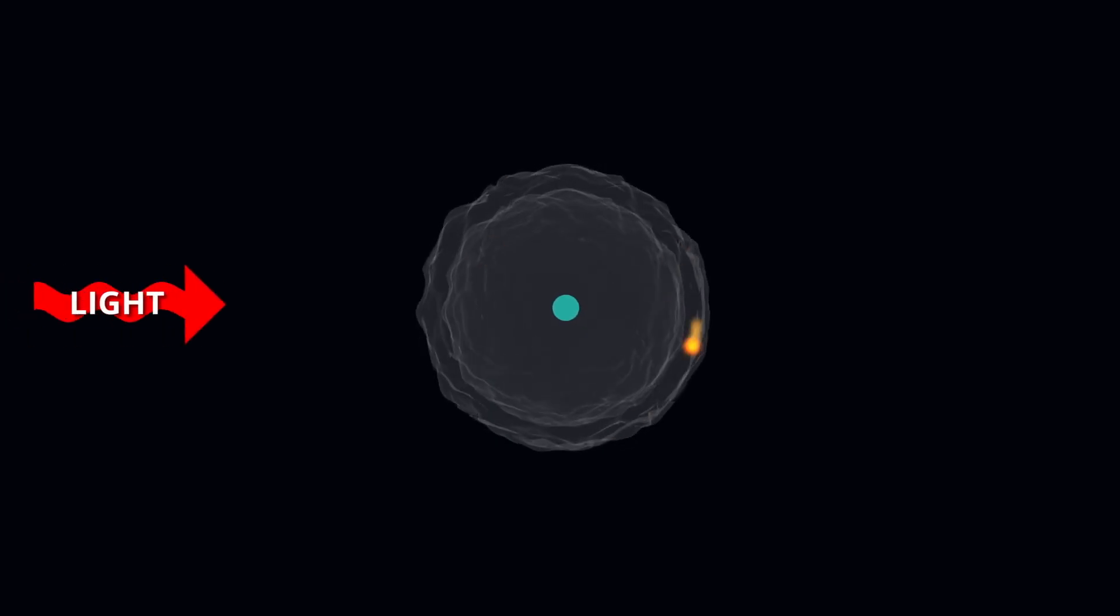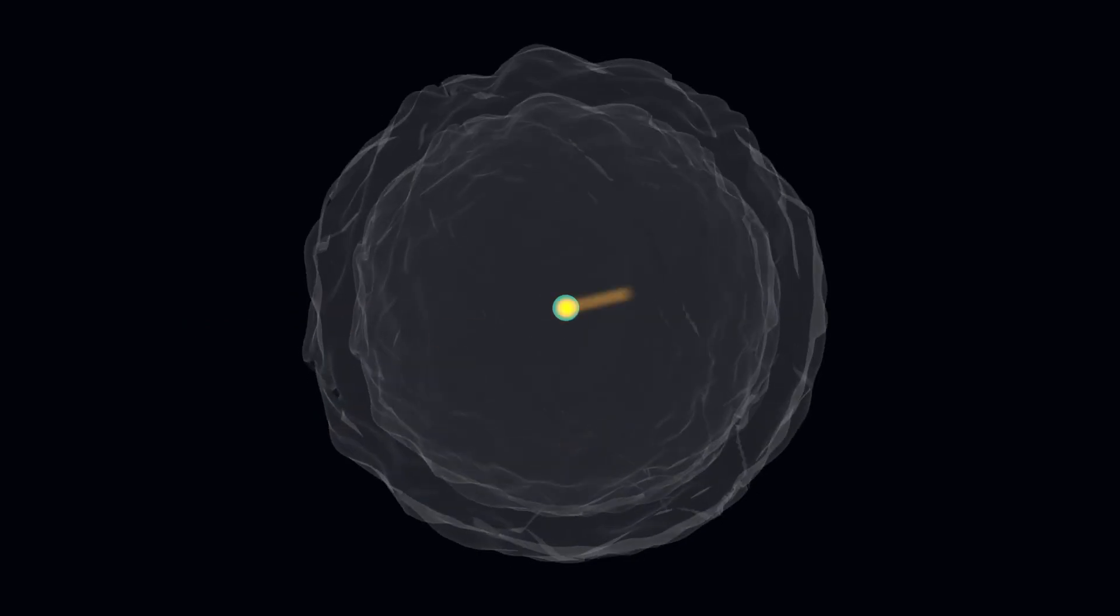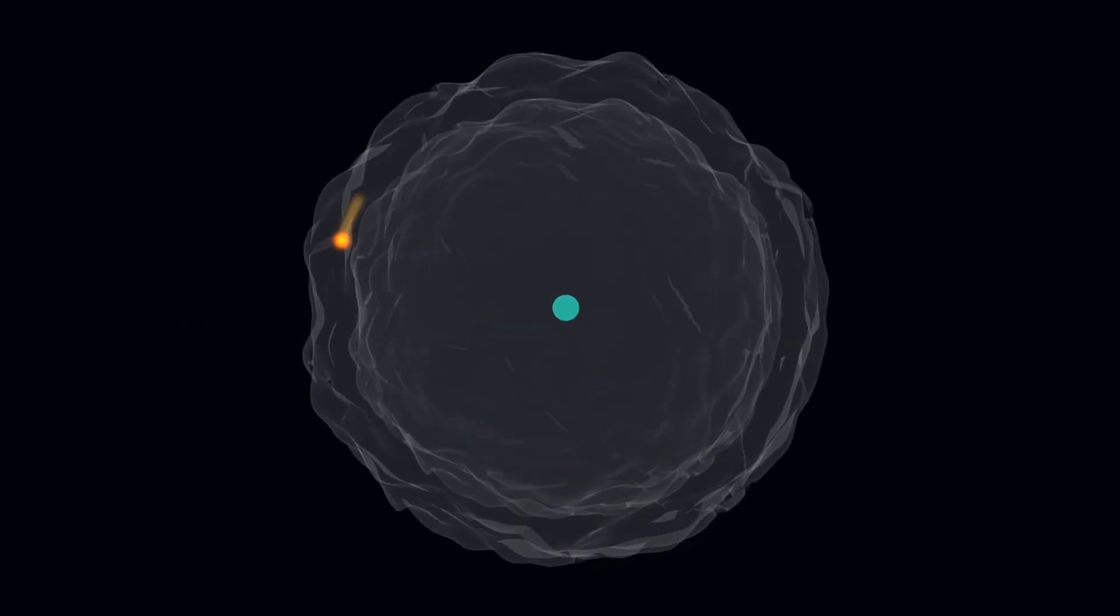When an atom absorbs energy, an electron can jump to a higher energy level. But because the energy levels in an atom are quantized, an electron can't jump to a higher level unless the energy it absorbs is exactly what it needs to get to that level. No more and no less.